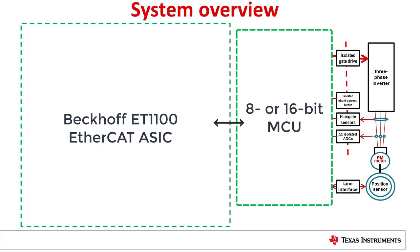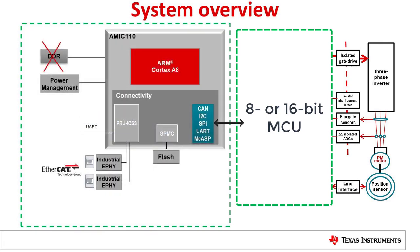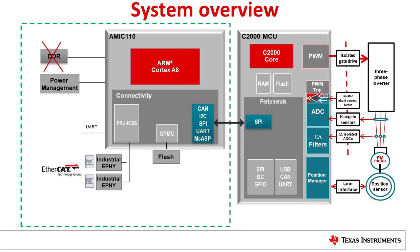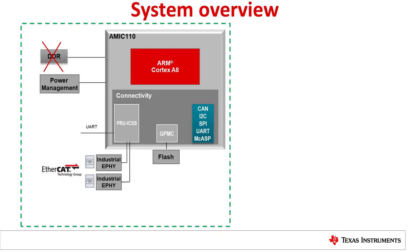Traditional EtherCAT Slave solutions are comprised of a dedicated and costly ASIC or FPGA such as the Beckhoff ET1100, and use an external 8 or 16-bit MCU for control. AMIC 110 provides a high performance, cost-competitive DDR-less solution for both ET1100 register-compatible operation, such as a traditional implementation where the EtherCAT stack is hosted by a SPY-attached MCU like the C2000, and a single-chip EtherCAT Slave solution where the AMIC 110 implements the full EtherCAT Slave and stack.